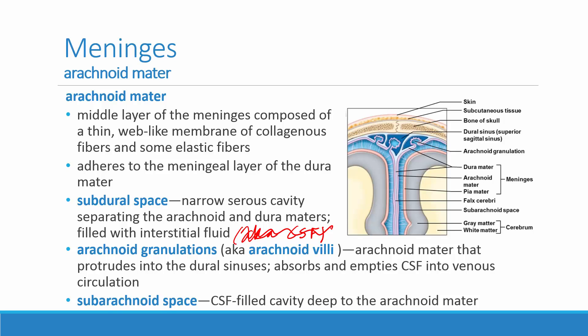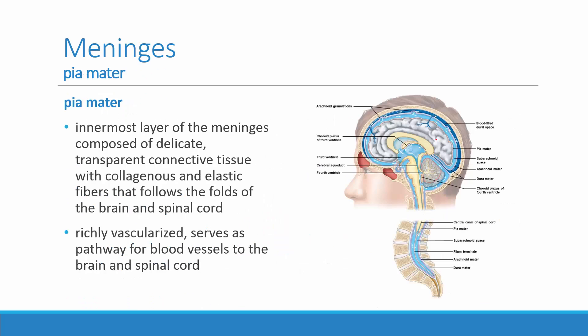Correction: it is at the subarachnoid space that the cerebrospinal fluid flows. Below the arachnoid mater is the subarachnoid space, and that's where the cerebrospinal fluid is flowing.